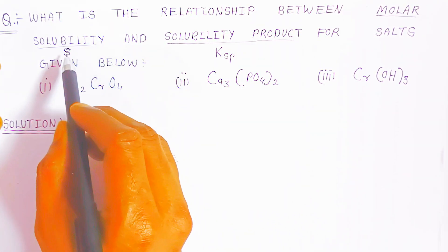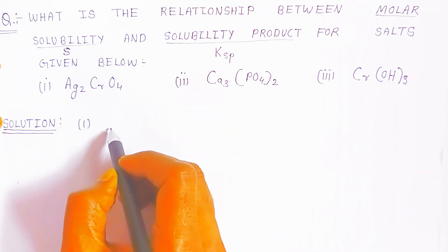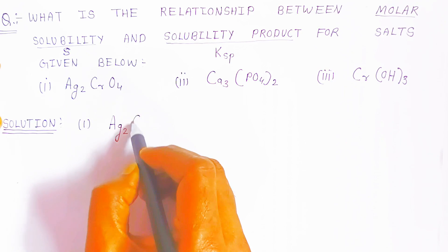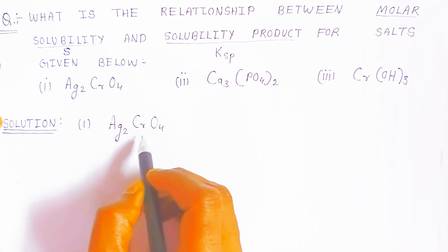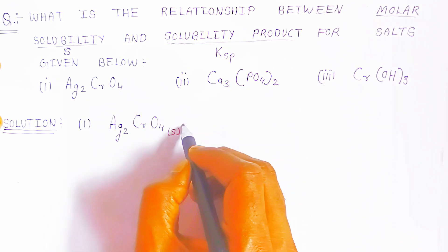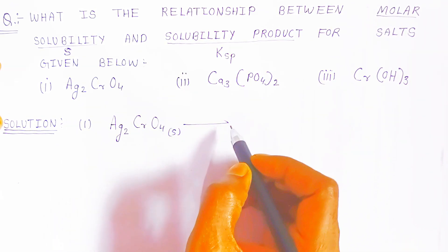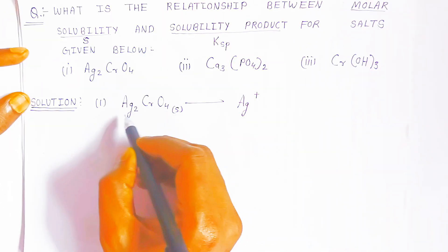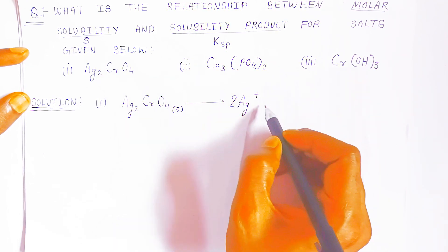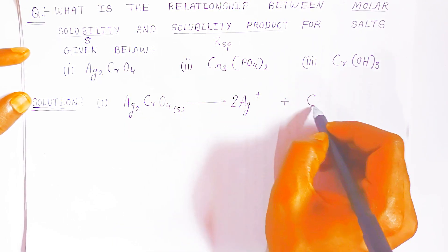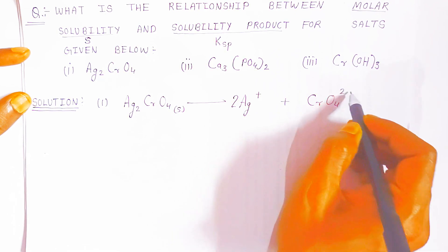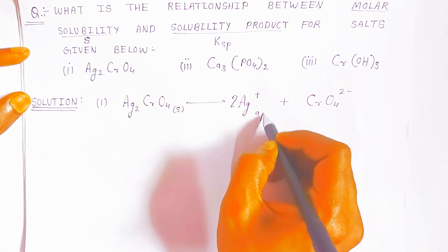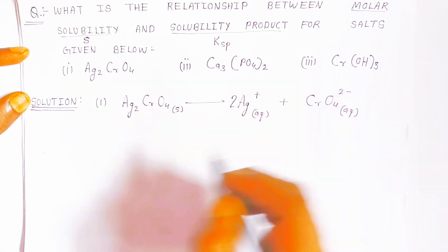First, we are going to see the relationship of S and Ksp in silver chromate. Silver chromate is Ag₂CrO₄. When you dissolve it in aqueous solution it gives two silver cations (Ag⁺) and one chromate anion (CrO₄²⁻). So we get two types of ions: a cation and an anion.